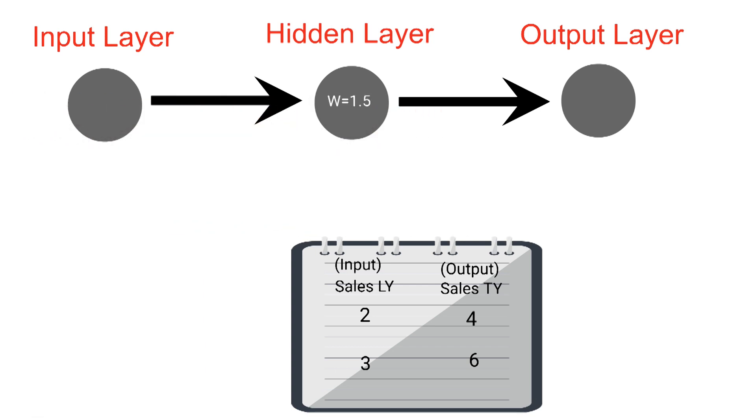Let's take our input value of 2 from our first example and feed it into our neural network. We'll multiply by our weight of 1.5 and we get an output of 3. We're expecting an output of 4, so we'll calculate our error. We'll take 4 minus 3, means our total error was 1.